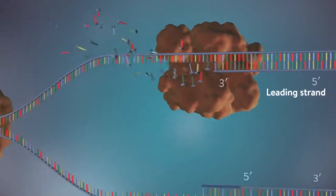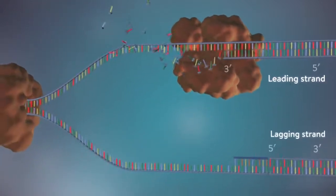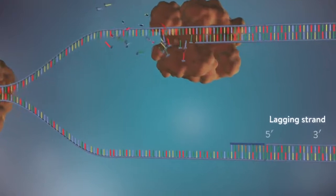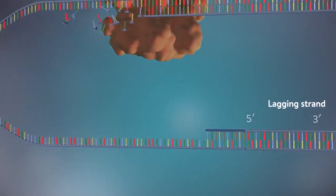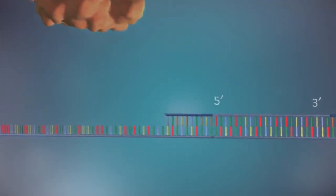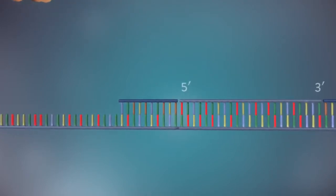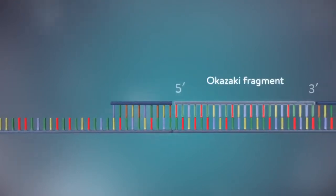The other strand, the lagging strand, cannot be made in this continuous way because it runs in the opposite direction. The DNA polymerase can therefore only make this strand in a series of small chunks called Okazaki fragments.